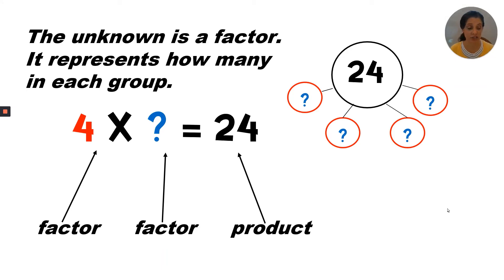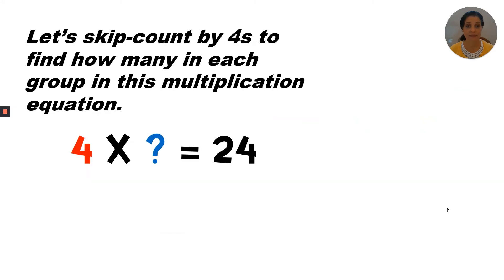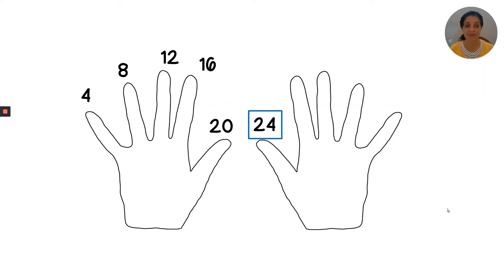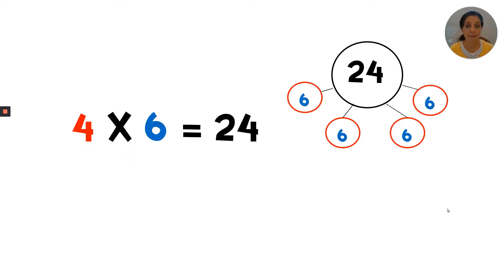We are missing that second factor — it represents how many in each group. Let's skip count by fours to find how many in each group in this multiplication equation: four, eight, twelve, sixteen, twenty, twenty-four. So four times six equals twenty-four. Notice how the number inside the circle is the same as the second factor — that tells us how many in each group. We have four groups of six.